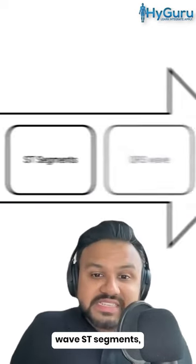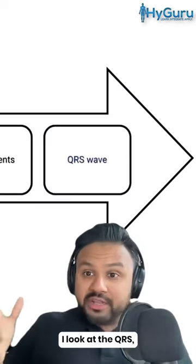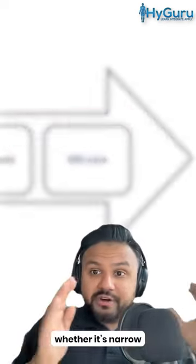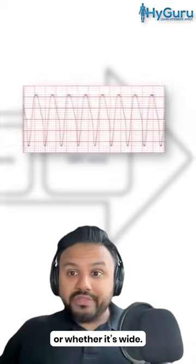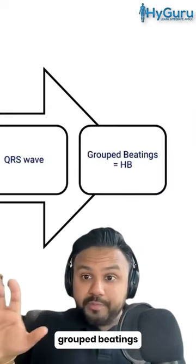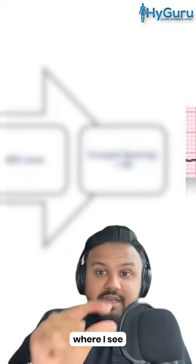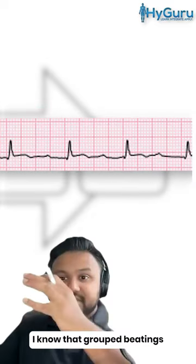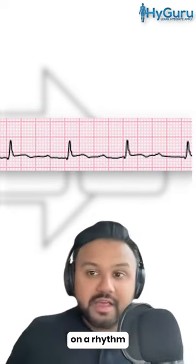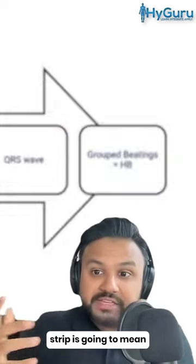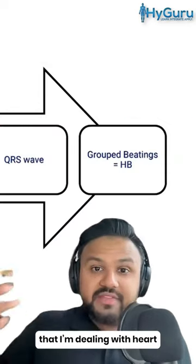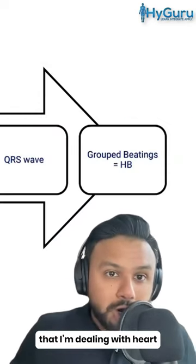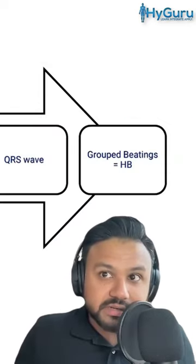After the P wave and ST segments, I look at the QRS — whether it's narrow or whether it's wide. And then if I see grouped beatings where I see PQRS, PQRS, P, PQRS, I know that grouped beatings on a rhythm strip is going to mean that I'm dealing with heart block as my likely diagnosis.